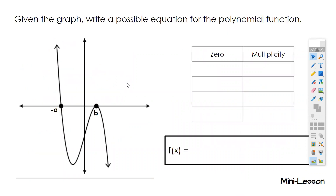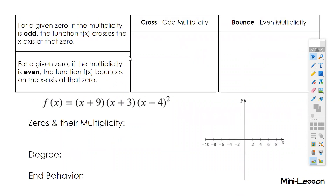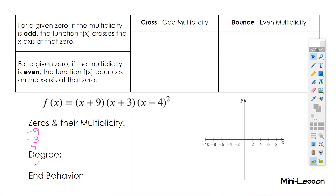So now we're going to take a look. On here, this is written out in factored form. When you want to find the zeros of this, you're going to switch the sign of each of these numbers. So the zeros are going to be negative nine, negative three, and four.